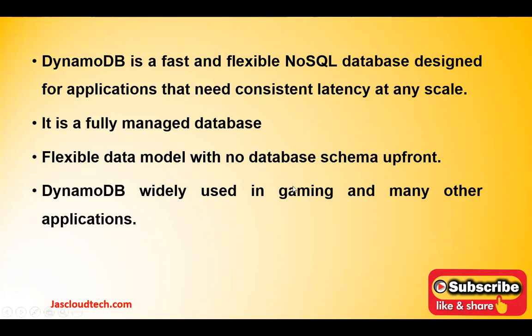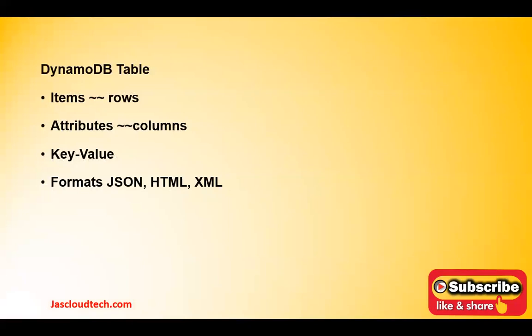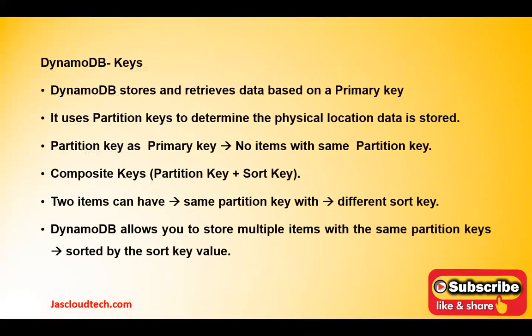DynamoDB is mostly used in gaming, IoT (Internet of Things), and many other applications where we need consistent data at very low latency. In DynamoDB tables, we have items — which we can also call rows — and attributes, which we can call columns. Key-value pairs are supported, and we can insert, download, and export data in the form of JSON, HTML, and XML. In today's video I'll be covering all the key concepts, but first we need to understand the different types of keys that DynamoDB has.